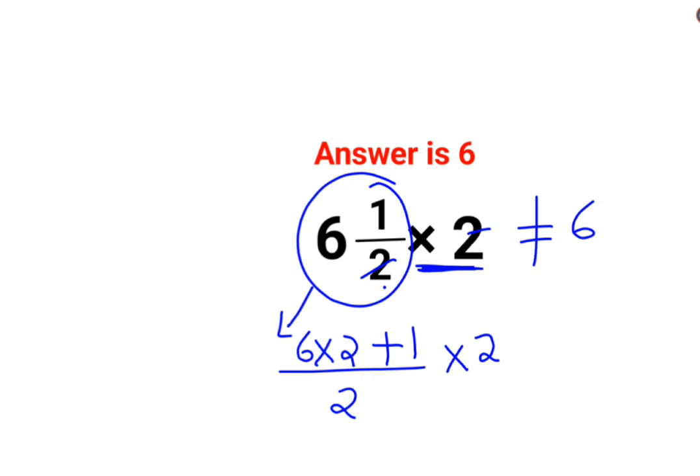Multiplied by 2 continues to be as it is. So here we have 6 multiplied by 2 is 12 plus 1, all over 2, multiplied by 2. 12 plus 1 is 13. So that gets you 13 over 2 multiplied by 2.